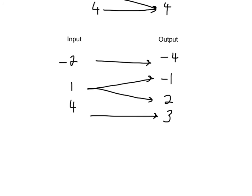Now for the next problem, we see that the other way happens. We have negative 2 and negative 4, 1 to negative 1, but 1 also goes to 2. This is not a function because each input does not have exactly one output.